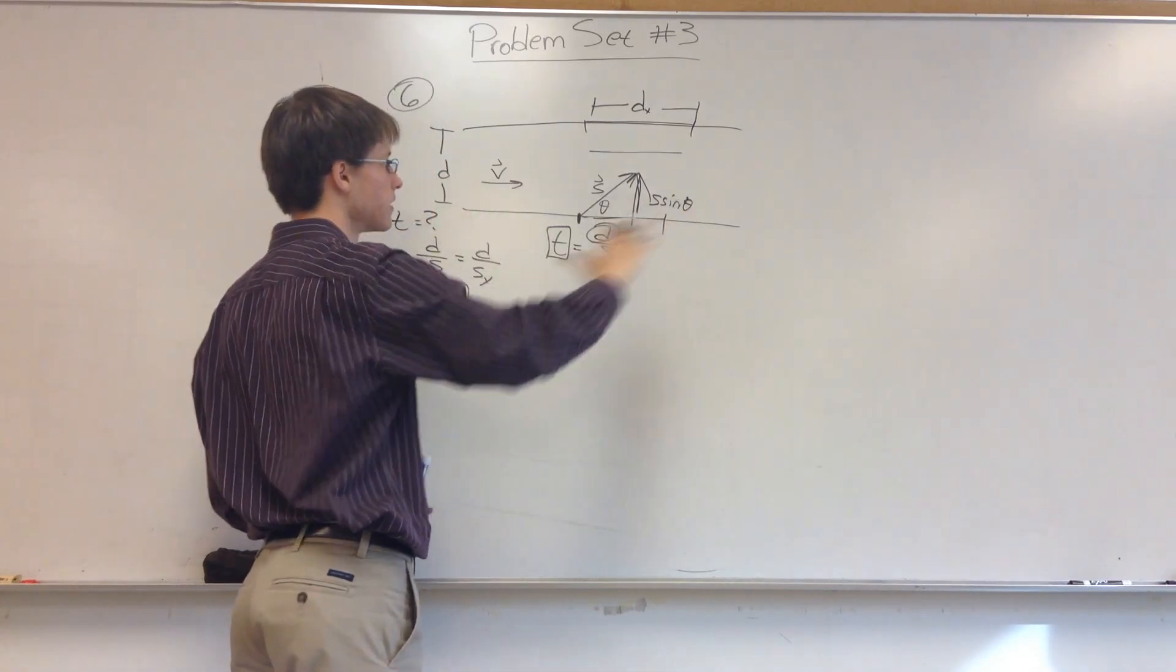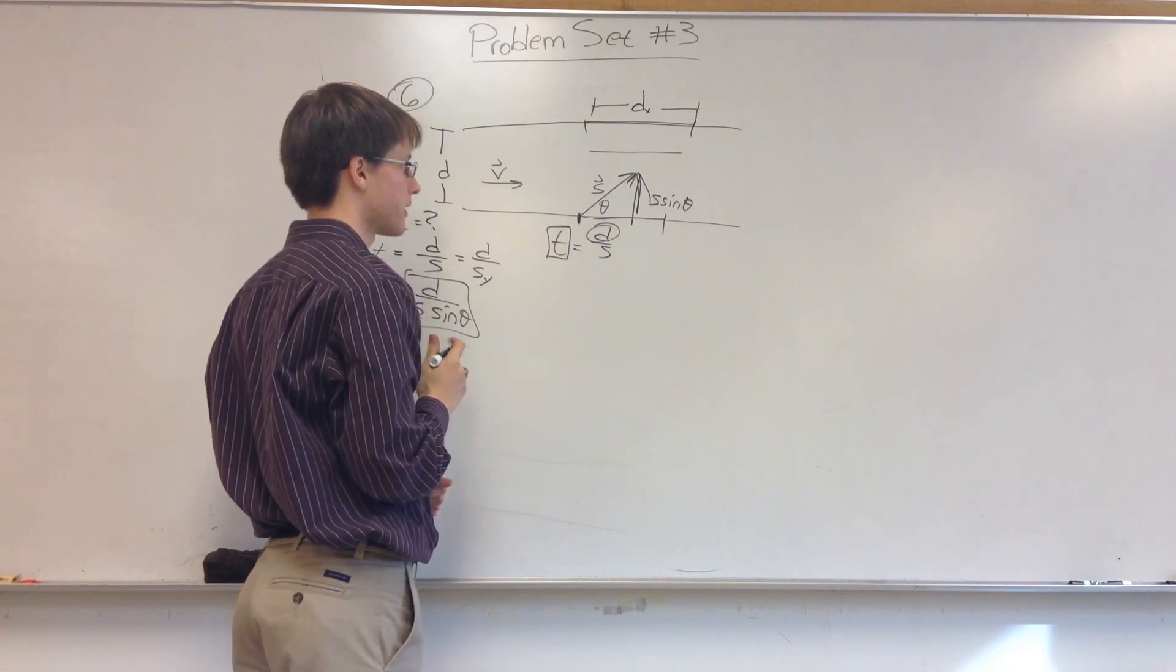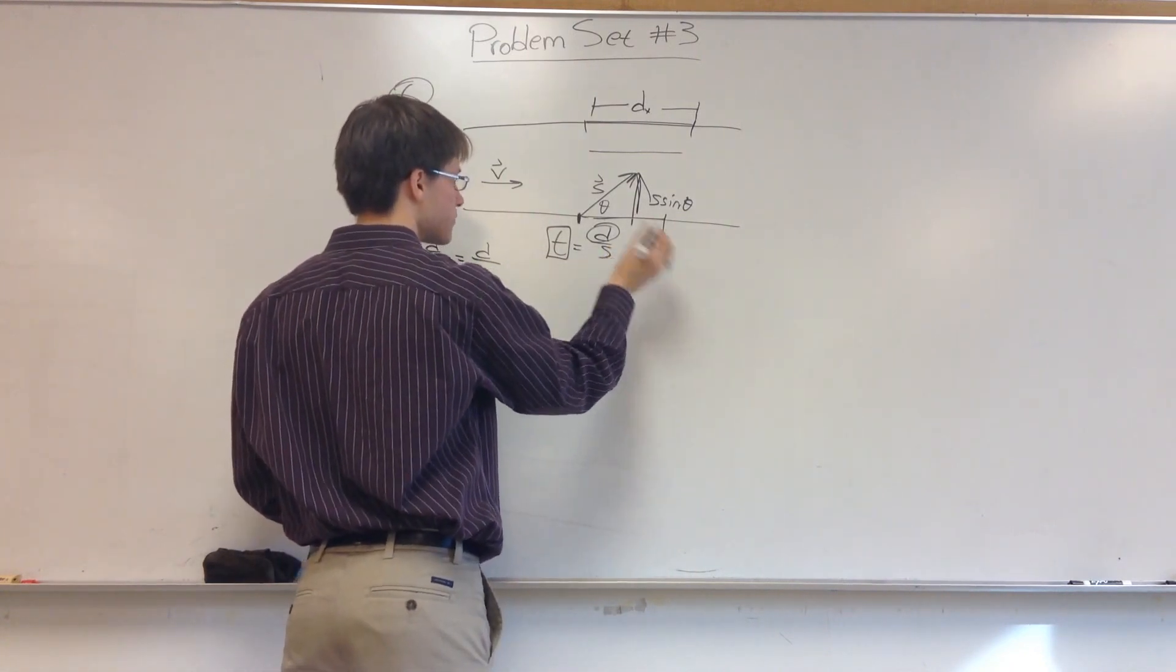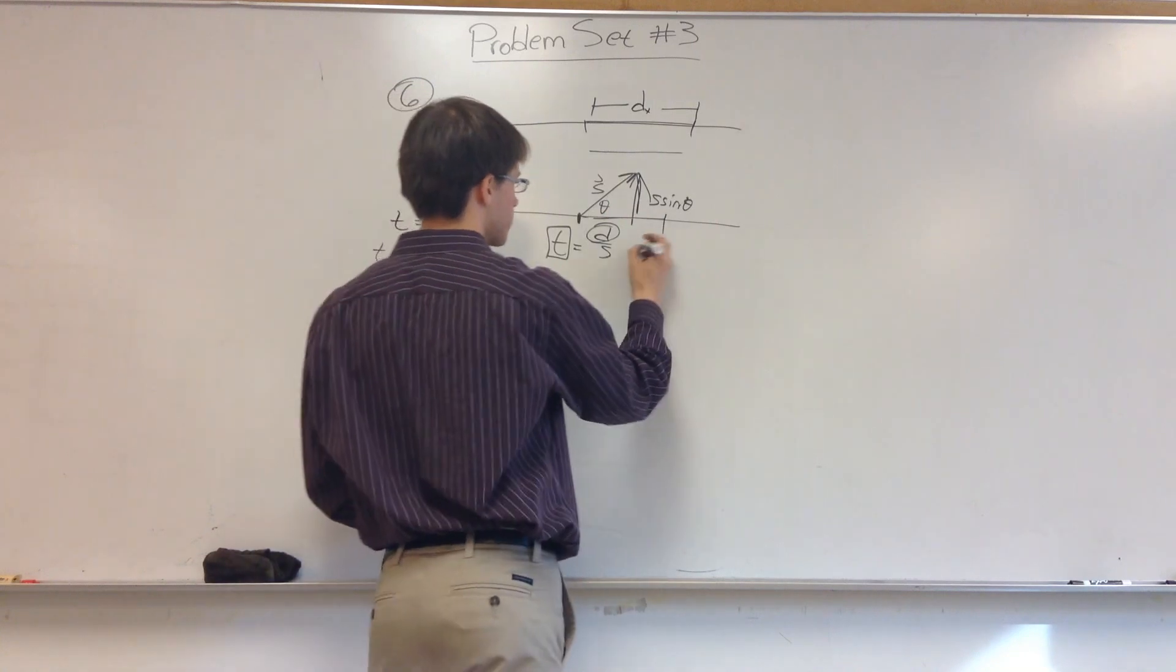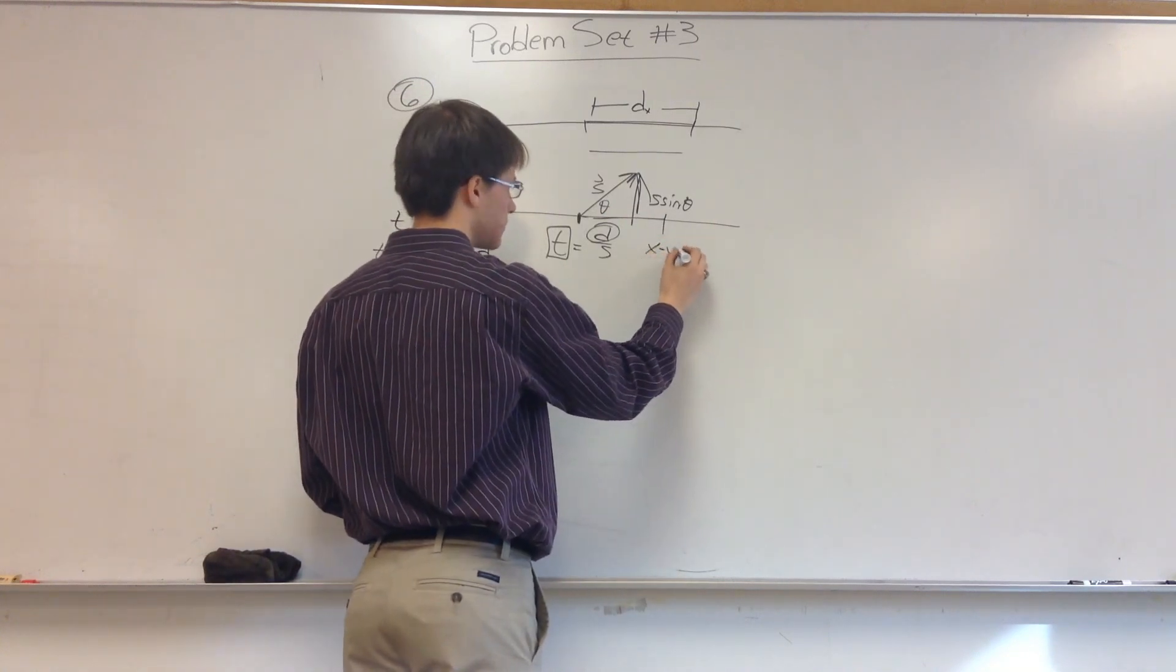So what we're going to have to do is say that his total X velocity is equal to the sum of S cosine theta, which is how much the swimmer is contributing,